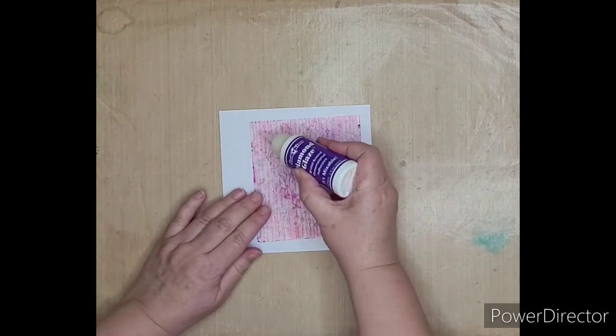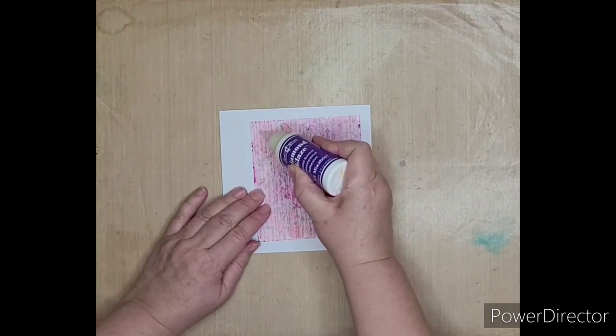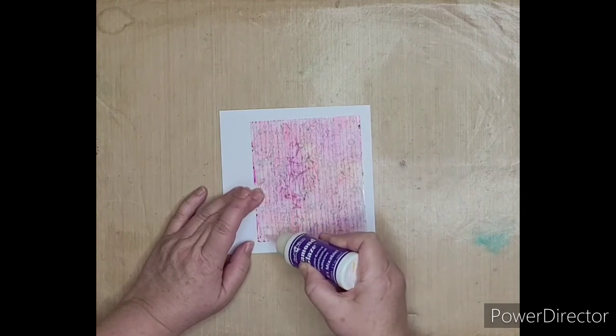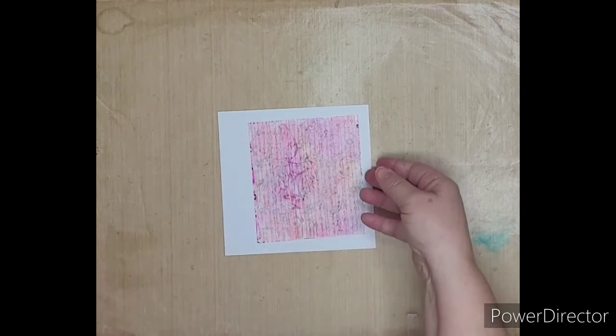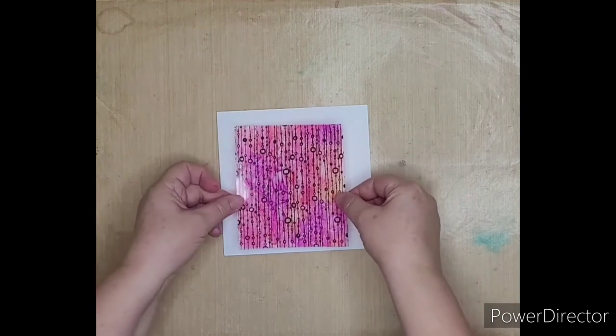Then to adhere to your card, just a little bit of diamond glaze in each corner and that will be enough to hold it in place. Then finish with an image or a greeting of your choice.